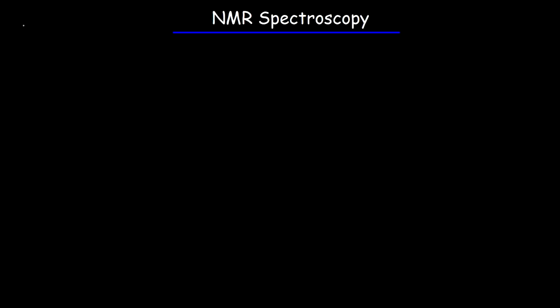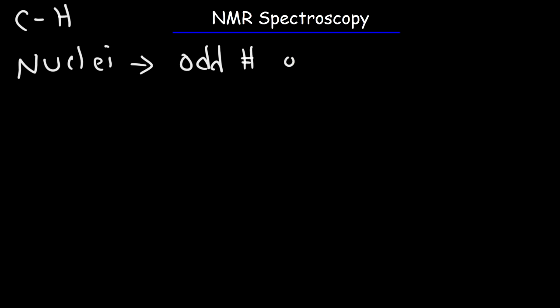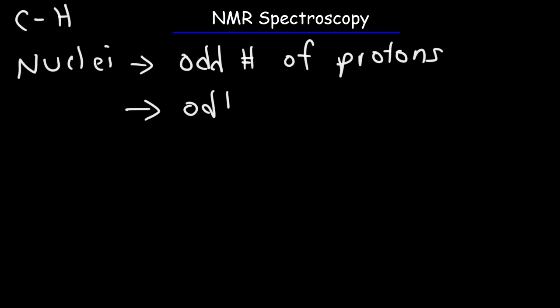In this video, we're going to talk about the basics of NMR spectroscopy. NMR spectroscopy is useful for identifying the carbon-hydrogen framework of an organic compound. Now, it only works with certain nuclei — those with an odd number of protons or an odd number of neutrons.